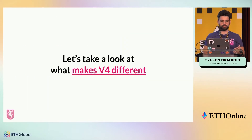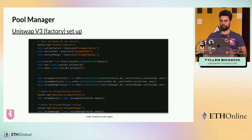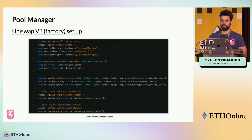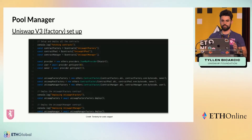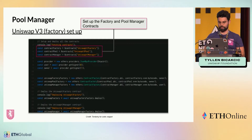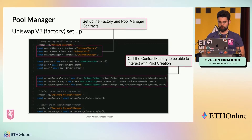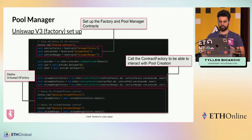Let's dive into what makes v4 different. In Uniswap v3, the way you would create pools was in a factory-type style. You would go to the pool factory contract, the factory contract would then spin up a new, totally separate pool address for you, and the pools would all live separately at different addresses. Then you would have to call each of those addresses individually.